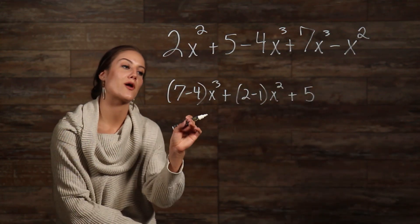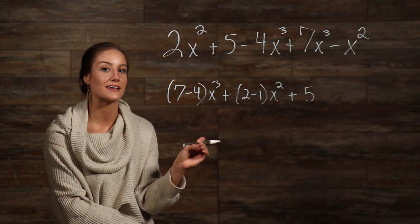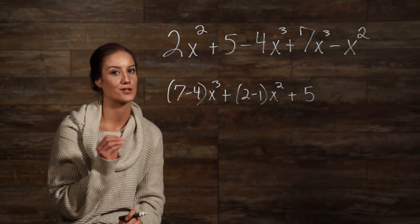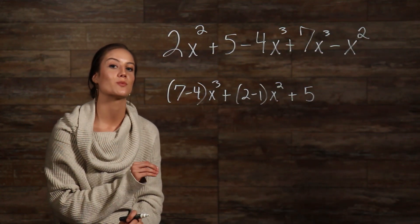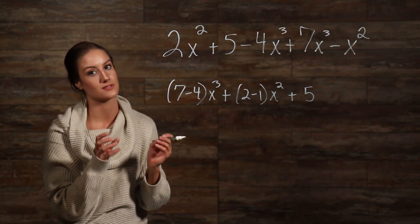Now, the reason that I brought my term with a 3 in the exponent to the front is because in the standard form of a polynomial equation, you always bring your term with the highest number in the exponent to the front, or to the left.